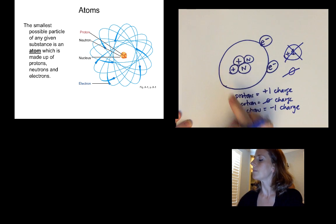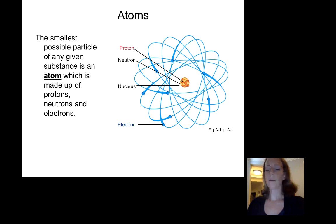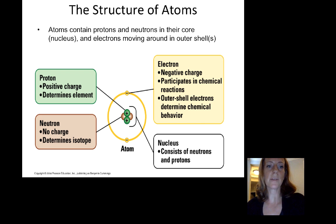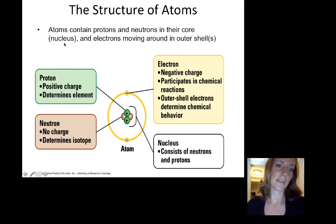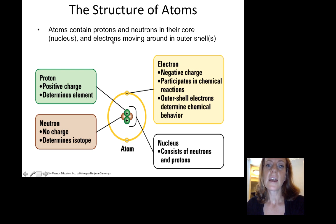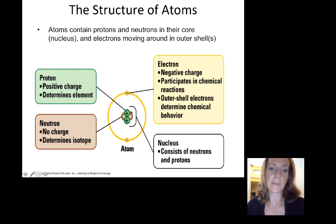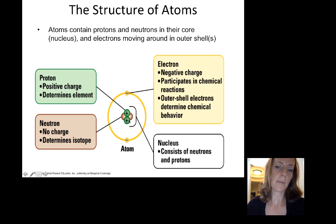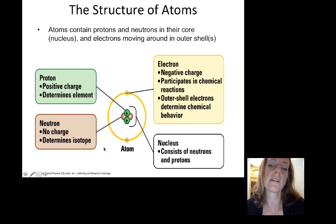Atoms contain protons and neutrons in their core — sometimes called the nucleus, but don't confuse this with the nucleus of a cell; this is the center of an atom. Electrons move around in outer shells. In the example shown, there are a couple of protons, a couple of neutrons, and electrons — just like the example I drew — and this particular atom is neutral, because the electrons balance the protons.